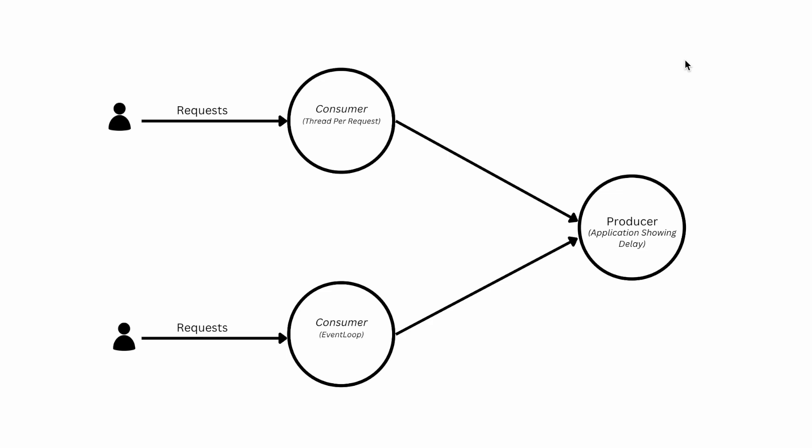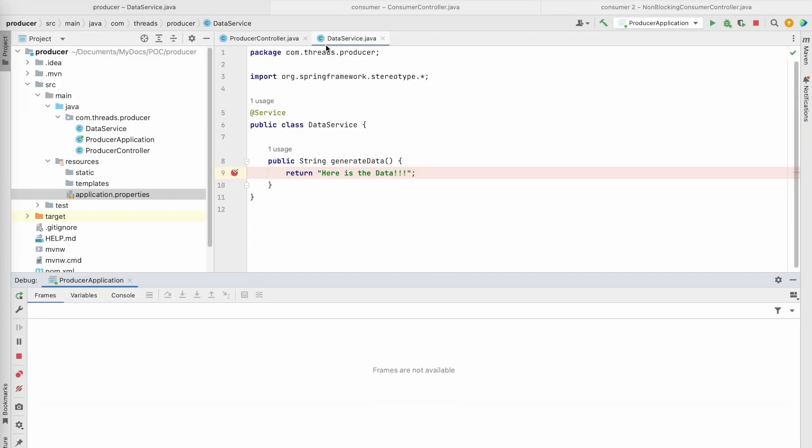I will purposely stop the request from the consumer and we'll see how exactly it behaves on the consumer side. I have created two consumers using two different request models: one is based on the thread-per-request model which is using Tomcat as the embedded server, and another consumer using the event loop model, simulated with Spring WebFlux using Netty as the embedded server by default.